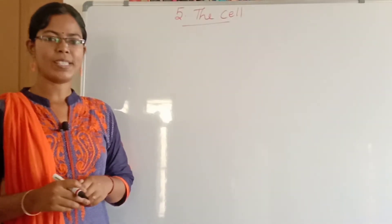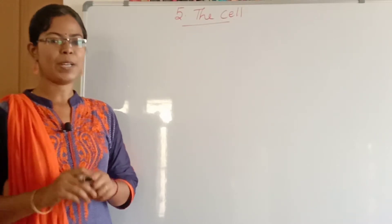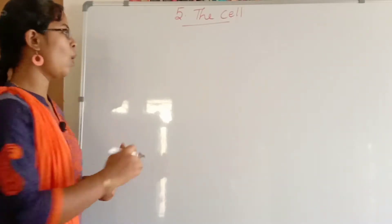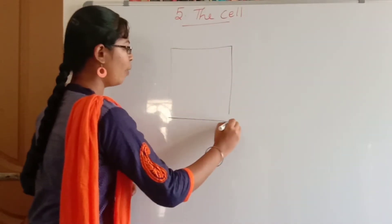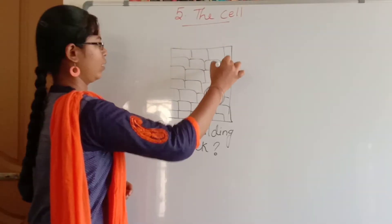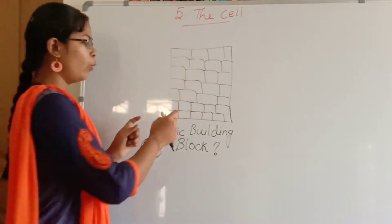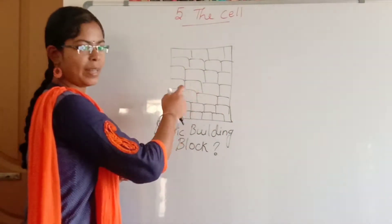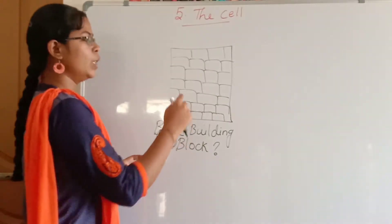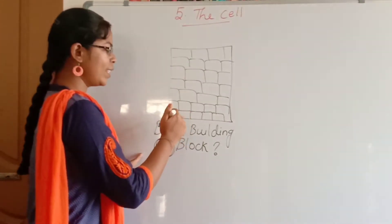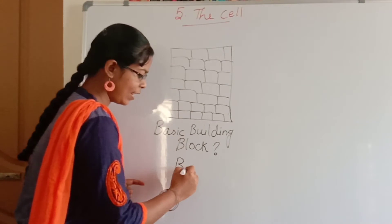Can I ask you a question? How is a wall made up of? What is the basic building block for a wall? When you stack bricks one by one and arrange them, the wall is formed. So the basic building block is this single brick.